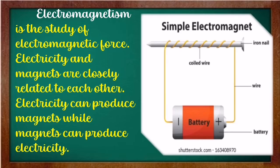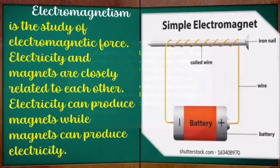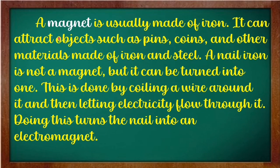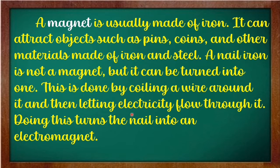You're going to do that later on. A magnet is usually made of iron. It can attract objects such as pins, coins, and other materials made of iron and steel. A plain iron nail is not a magnet, but it can be turned into one by coiling a wire around it and then letting electricity flow through it. Doing this turns the nail into an electromagnet.